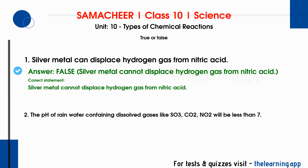Regarding acid rain: SO3, CO2, and NO2 dissolve in rainwater to make its pH less than 7. Rainwater pH value is normally 5 to 5.5, which is less than 7. This is true.